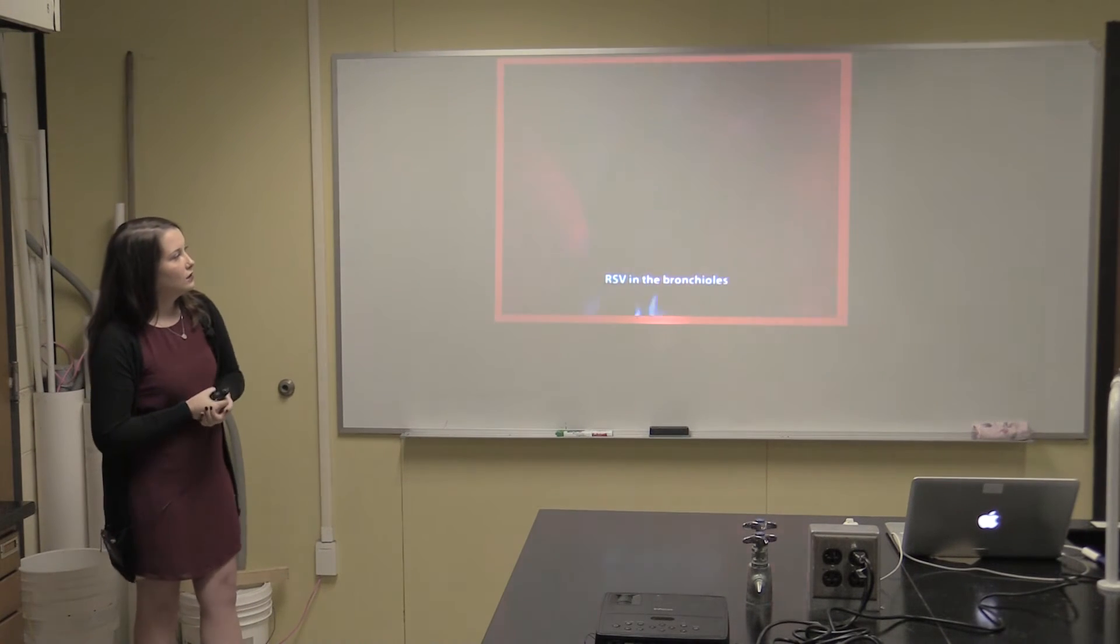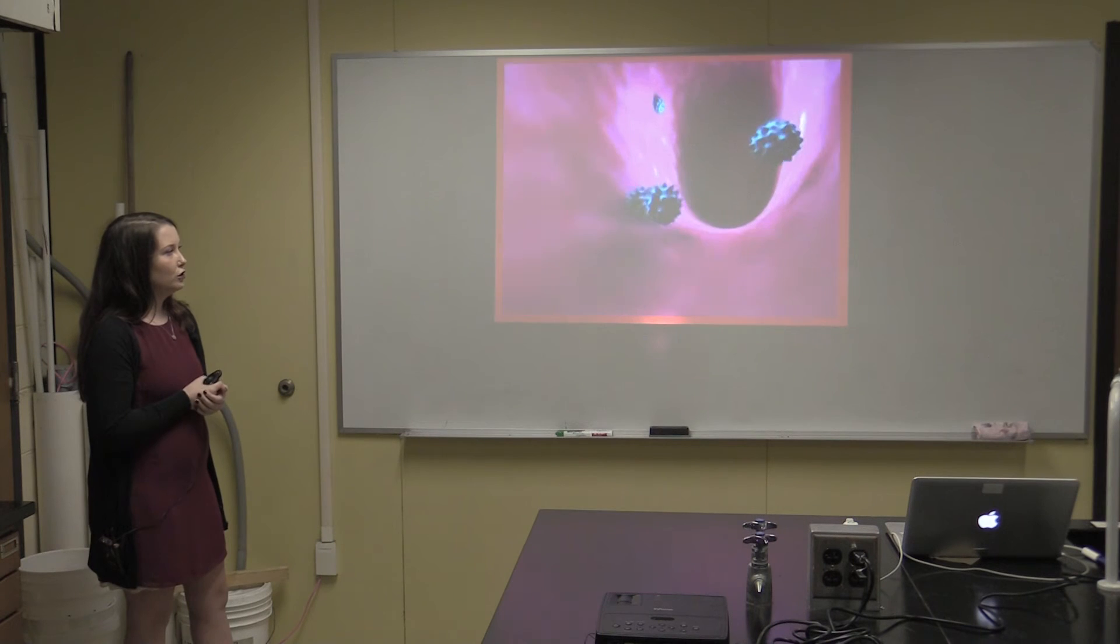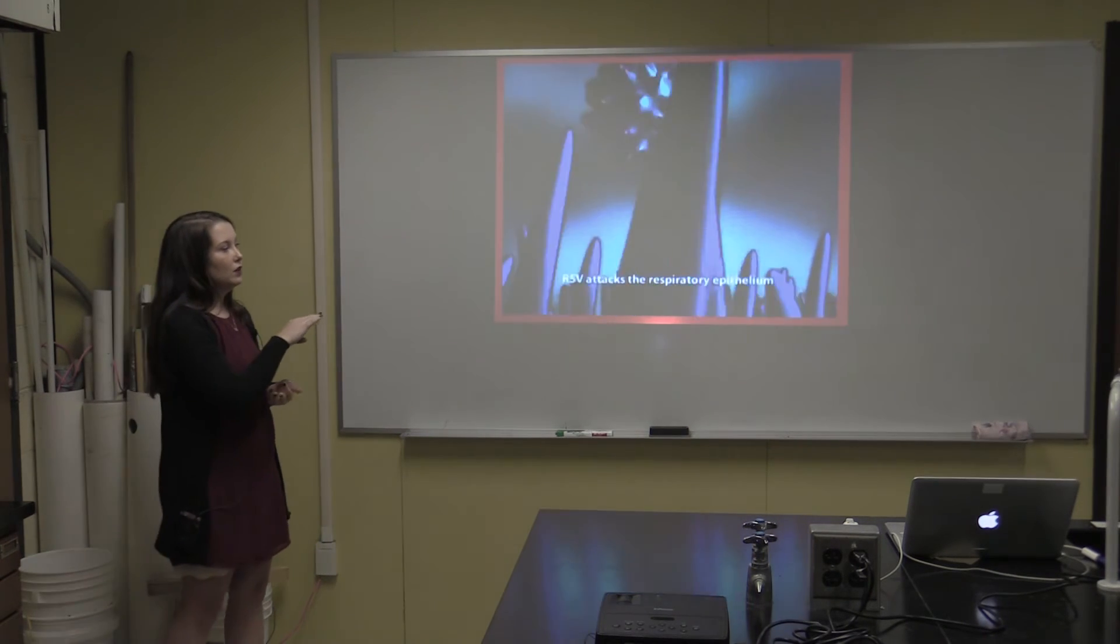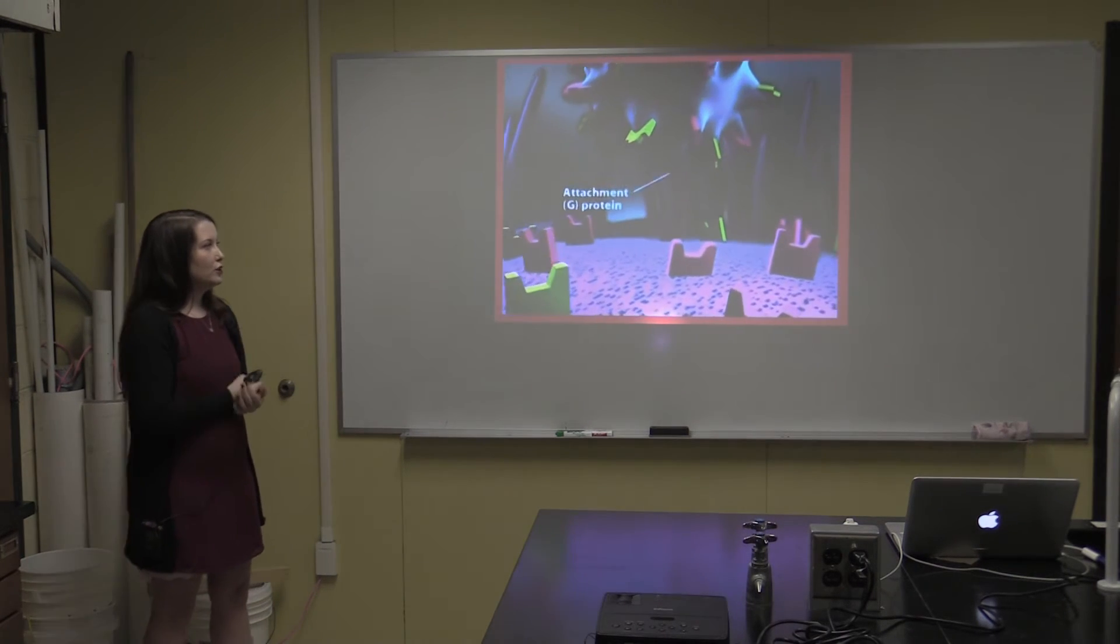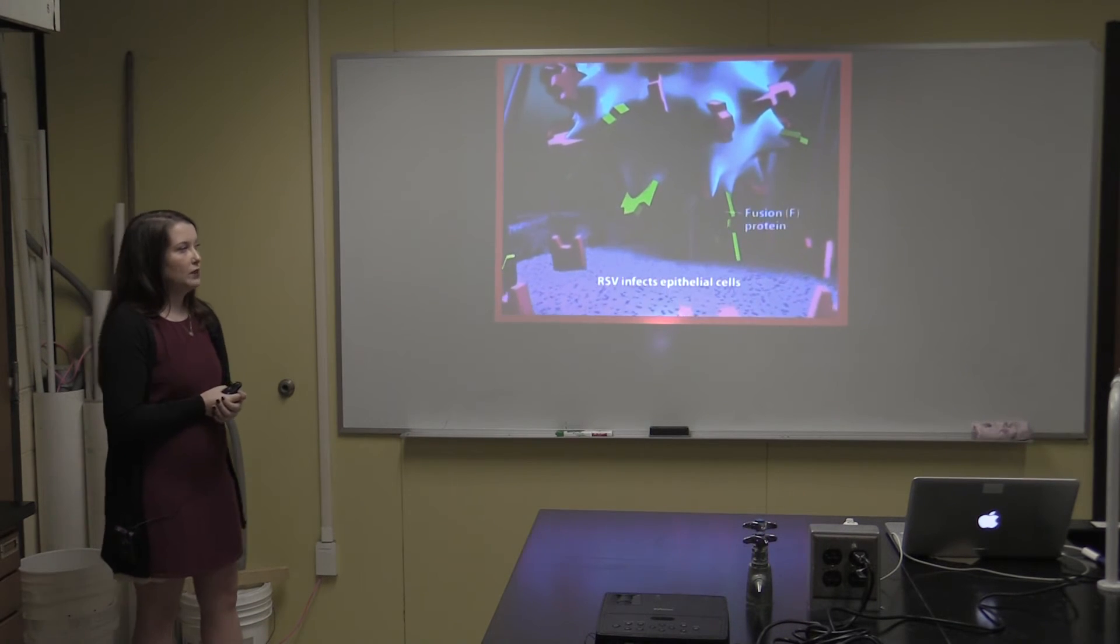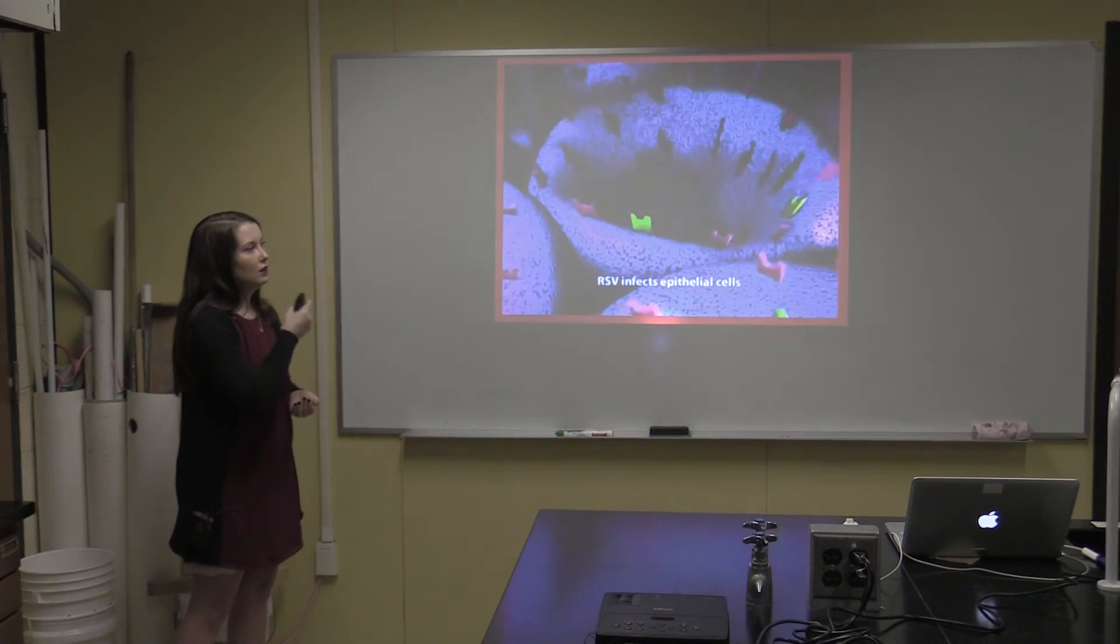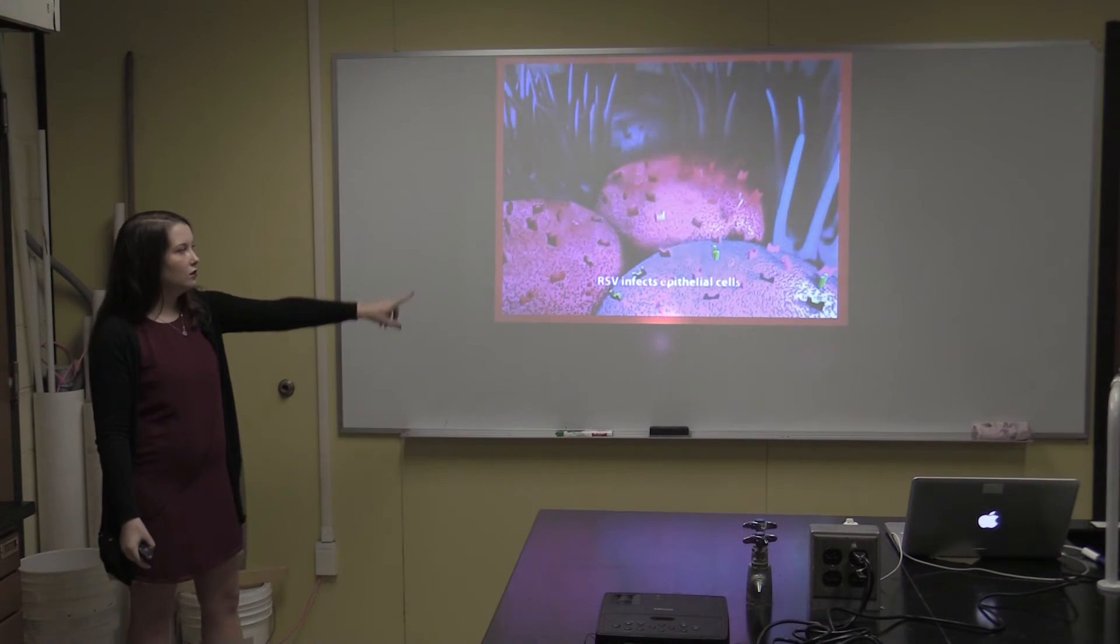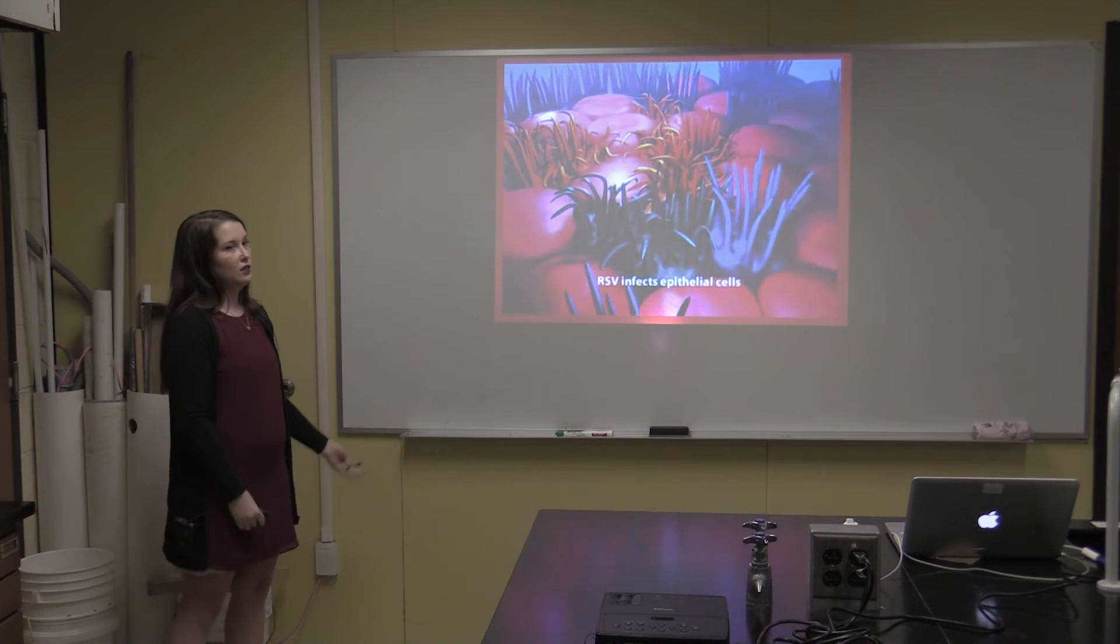As you can see, this is the RSV entering the trachea of the subject, and then it gets into the bronchioles and epithelium. Once at the epithelium, the glycoprotein attaches, and once that is fully attached, the fusion protein attaches right beside it. Once those two attachments are made, the cell recognizes it and allows it into the cytoplasm to transcribe and replicate. As that occurs, it affects the surrounding cells and keeps on going until the body's natural processes can fight it off.